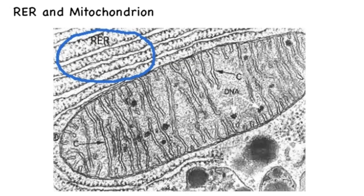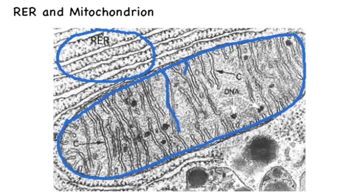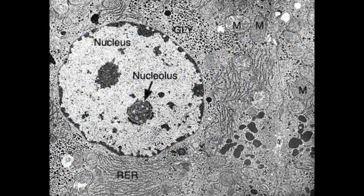In this image we can once again identify the region of the rough endoplasmic reticulum by its association with ribosomes, but the larger organelle present here is the mitochondrion. We can see the lines that we previously represented on our diagram — the internal compartments formed by the inner membrane of the mitochondrion.